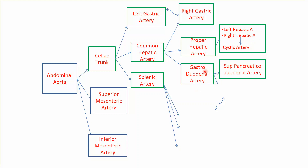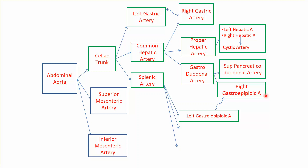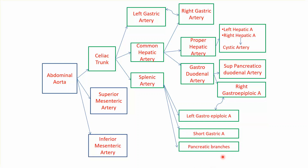The gastroduodenal gives two arteries according to its name: one is the superior pancreaticoduodenal artery supplying the upper half of the duodenum and pancreas, and the other is the right gastroepiploic supplying the greater curvature of the stomach. From the splenic artery comes the left gastroepiploic artery. These right and left gastroepiploic arteries anastomose along the greater curvature of the stomach. The splenic artery also gives the short gastric artery supplying the fundus of the stomach, and pancreatic branches supplying the pancreas.